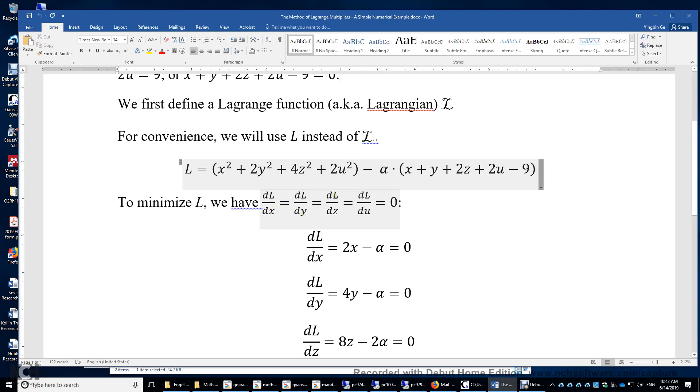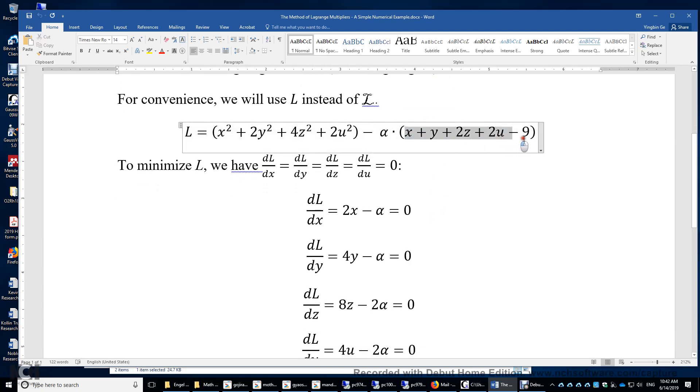dL over dy is 0. dL over dz equals 0. dL over du equals 0. So remember, over here, this is the constraint. This always equals 0. And it doesn't matter what the value of alpha is. So this is the clever part of defining this Lagrangian.